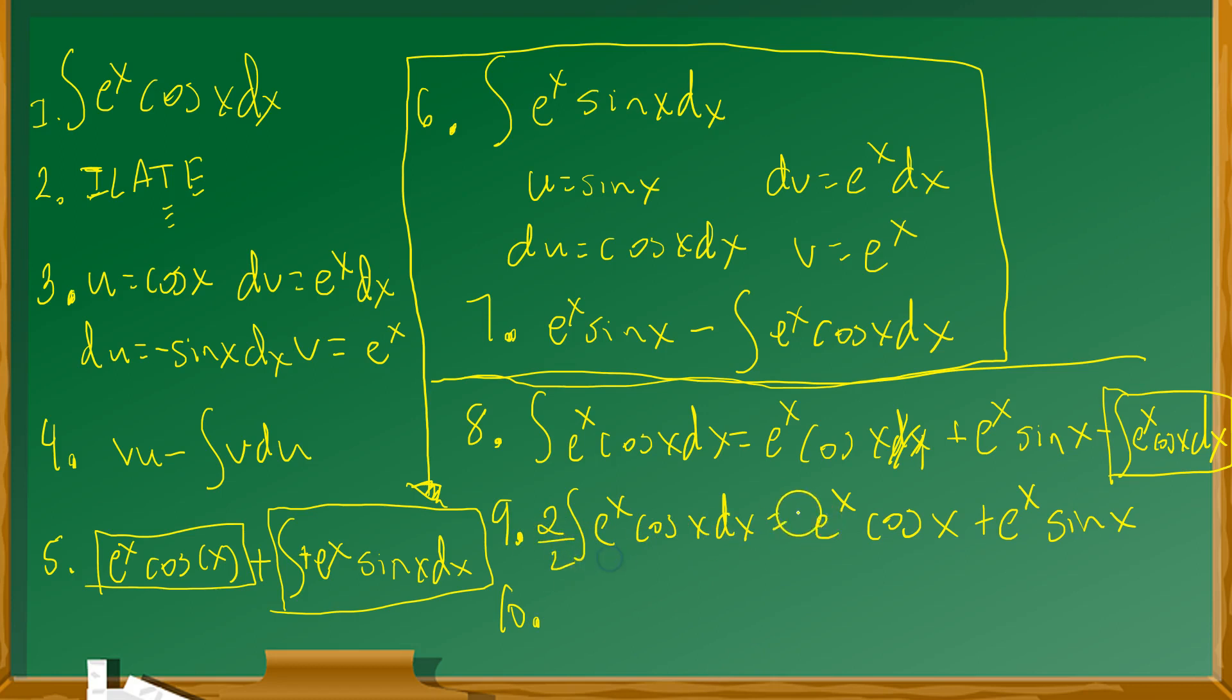Okay, so I'm dividing everywhere by two, which is equivalent to just multiplying by a half. So on the left side, step number 10, these twos cancel. And I end up with just e to the x cosine x dx equals one half times e to the x cosine x plus e to the x sine x. And that is the final answer.